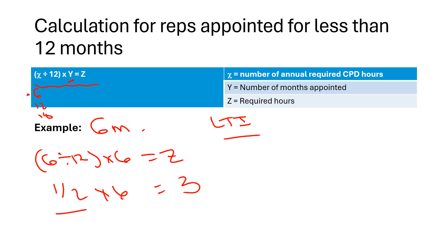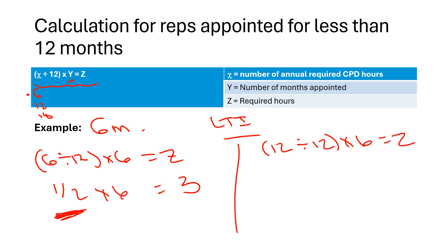In the exam, you will never get decimals because you're not allowed to use a calculator. It will always be fixed amounts. So if our representative was appointed for one class of business and two product categories, the annual requirement would be 12 hours. The formula would be: 12 divided by 12, times 6 — that's 1 times 6, which equals 6 hours required. This is more likely for exam purposes.